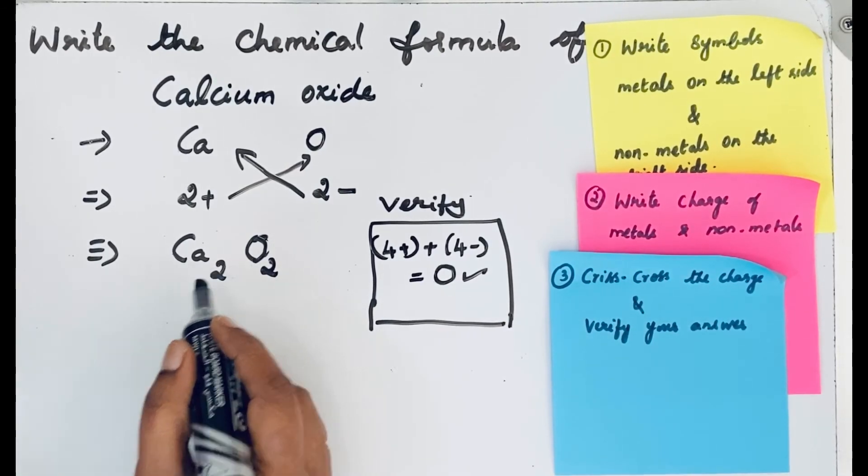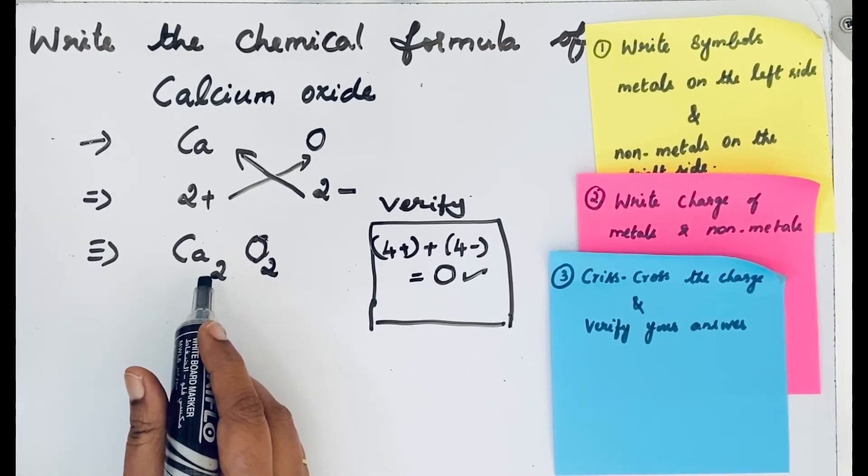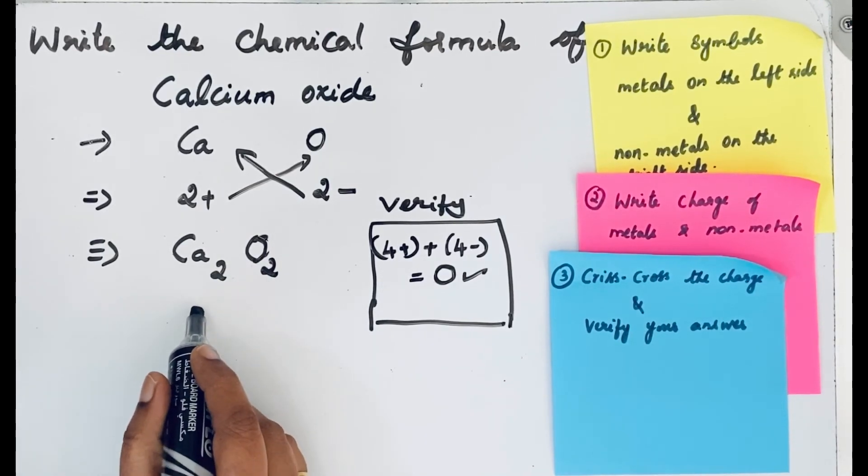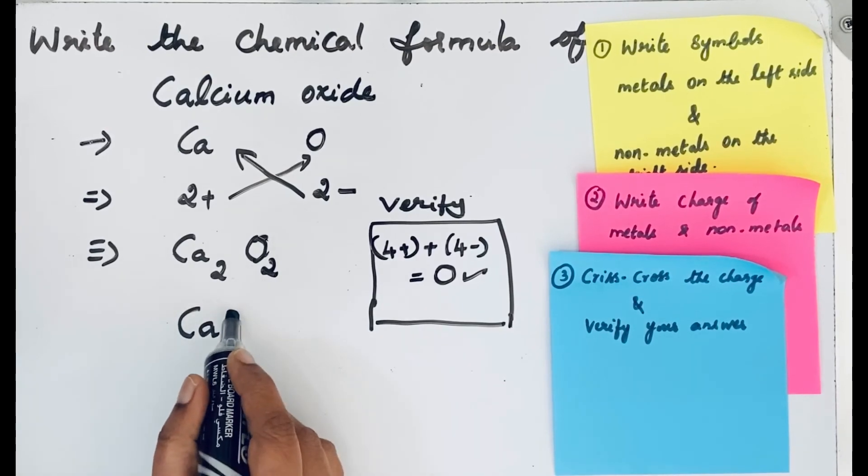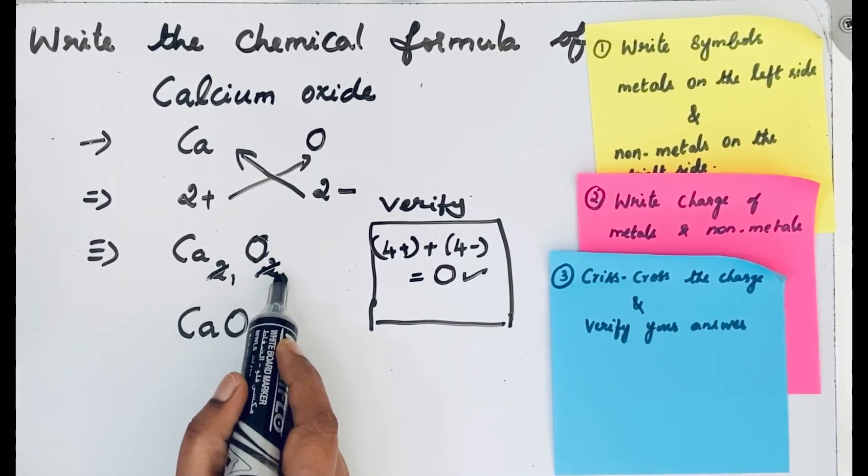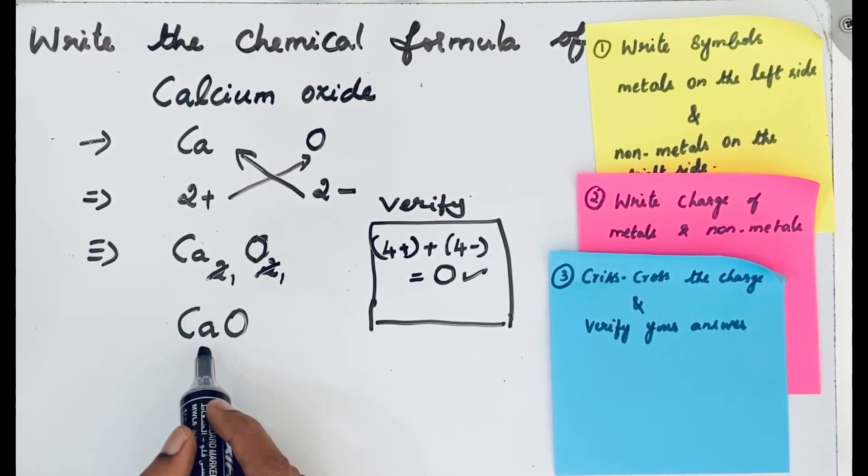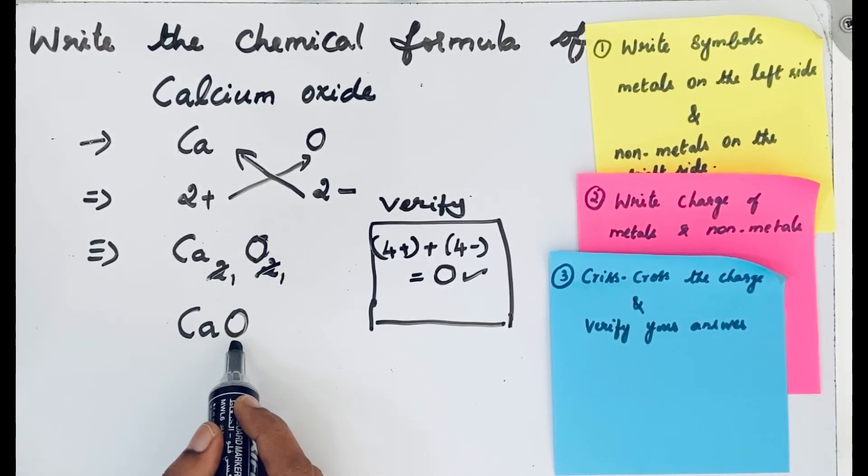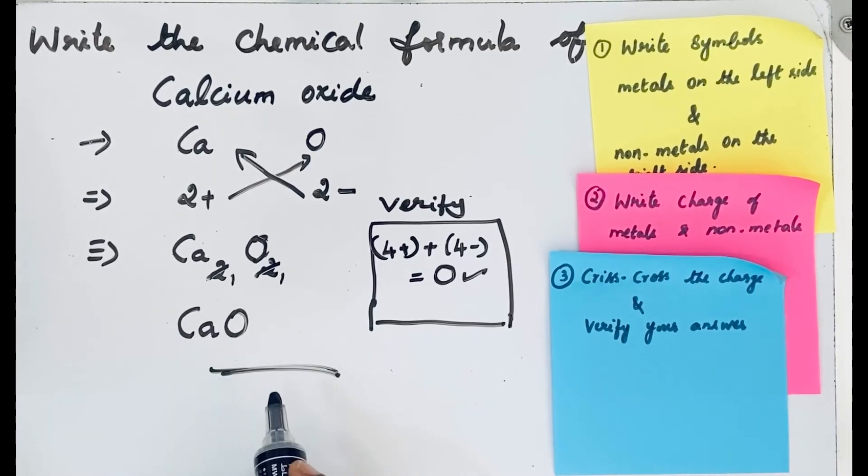The simplified formula of calcium oxide is CaO, because this can be simplified as 1-1, so the formula is CaO. Thanks for watching.